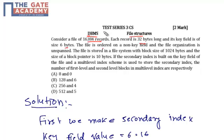The file is ordered on a non-key field and the file organization is unspanned. The file is stored in a file system with block size of 1,024 bytes and block pointer size is 10 bytes.